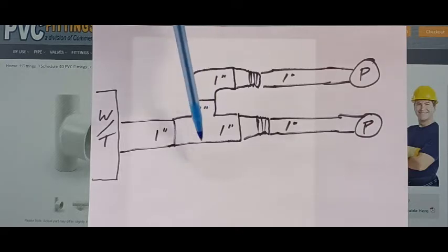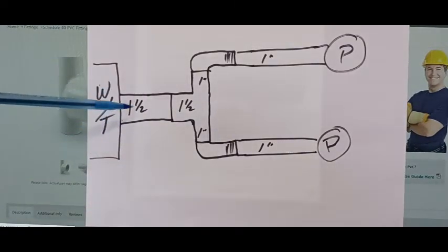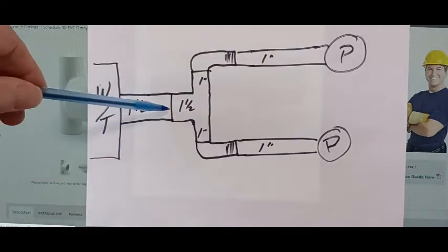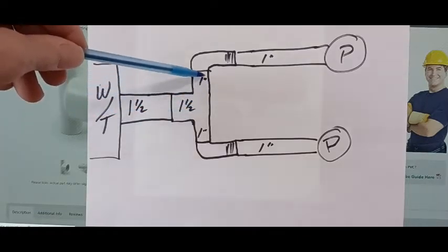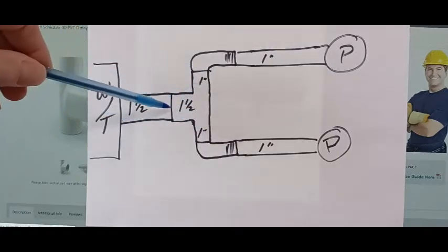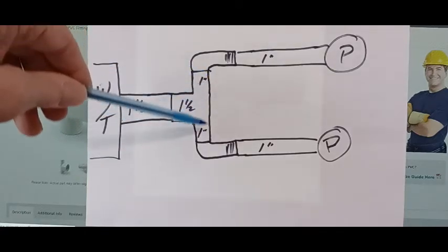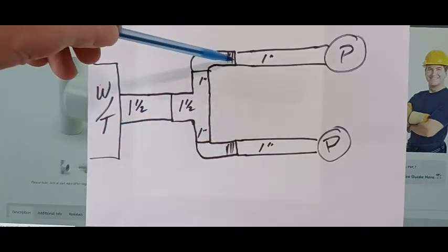Here's the water tank and here's your inch and a half coming out of your water tank, and it splits off which is called a bull tee. So inch and a half coming in, inch coming off, a couple of 90s here with the barb fitting.